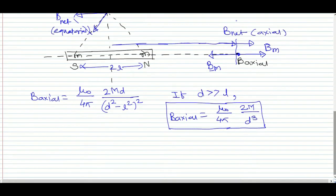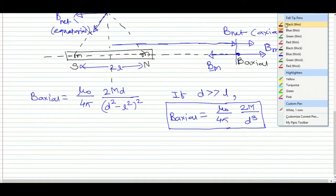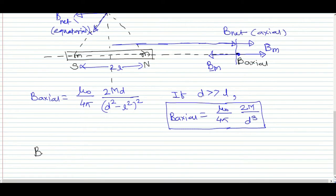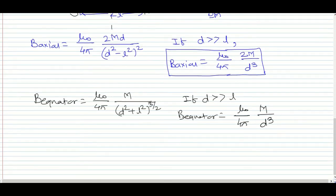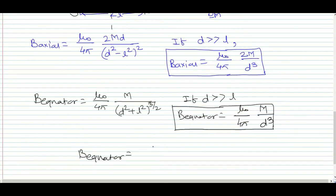The fourth formula: B at the equator is μ₀/4π × M / (d² + l²)^(3/2). When d is much greater than l, B_equator = μ₀/4π × M / d³. From these two equations, B at equator equals B at axial divided by 2.